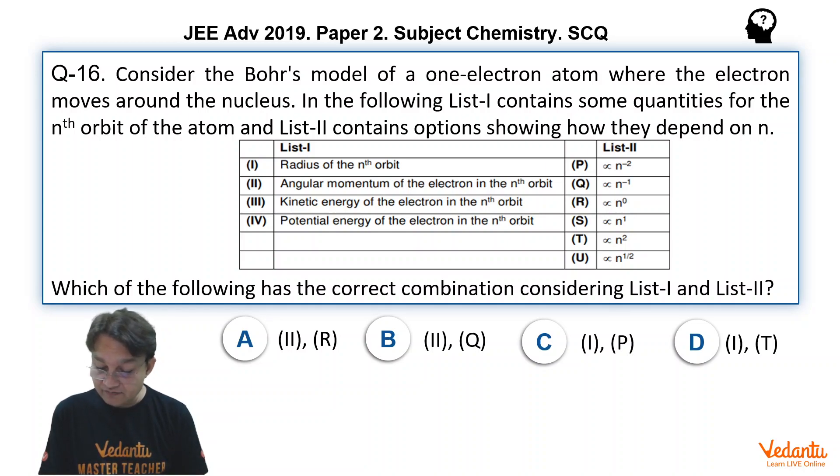C: First is matching with P. Radius of the nth orbit is matching with P. That is also not possible because radius is proportional to n square.